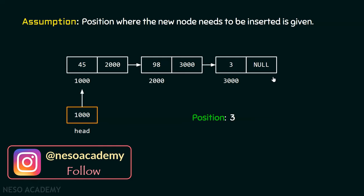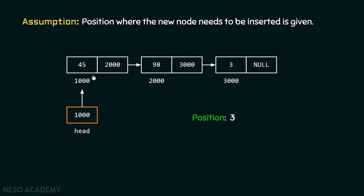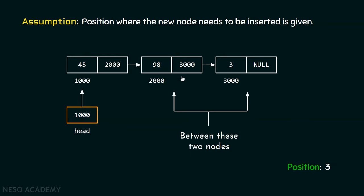This is the linked list we are working with. You can see the head pointer is pointing to the first node of this list, and I want to insert a new node at position number three — that is, at this particular position between these two nodes. Position one is here, position two is here, and position three means between these two nodes.